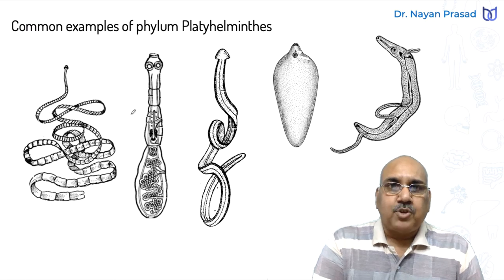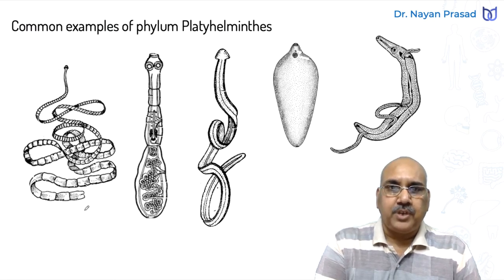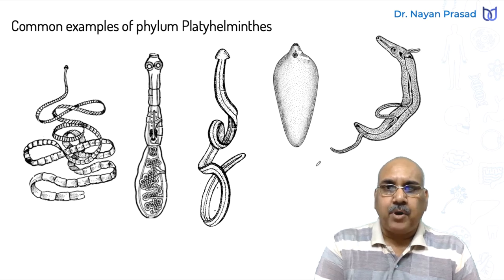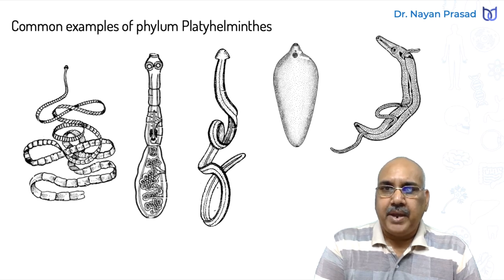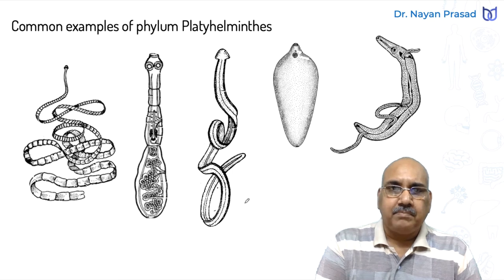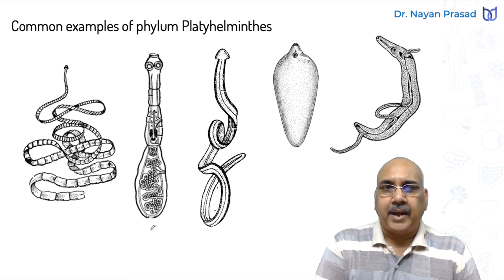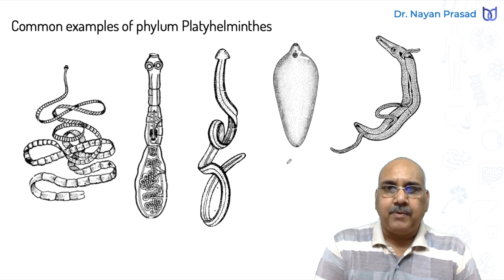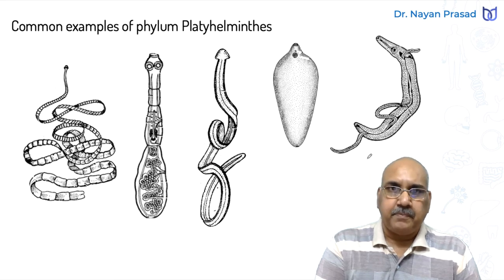These are the common examples of Phylum Platyhelminthes, in which we see different members with a flat body. Schistosoma, the blood fluke, has separate male and female individuals living together. The liver fluke, bipalium, and tapeworms — tapeworms have a ribbon-like flat body with a segmented body, while in bipalium and liver fluke the body is unsegmented. In blood fluke also the body is unsegmented. So some members have a segmented body, some have an unsegmented body.